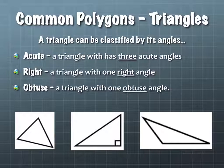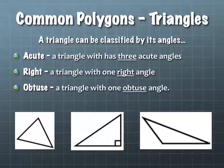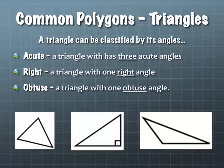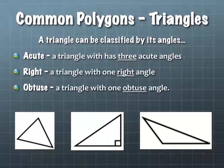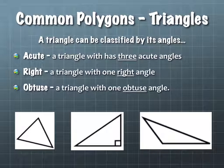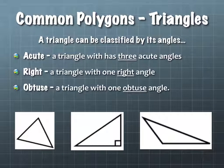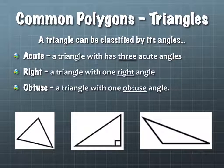Some common polygons. One of our smallest number of sided polygons is a triangle. A triangle can be classified in two ways. One way is by its angles — looking at whether a triangle is acute, right, or obtuse.